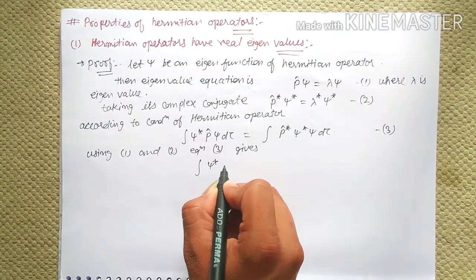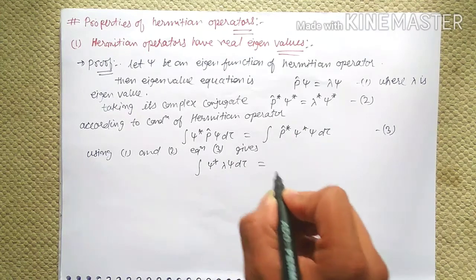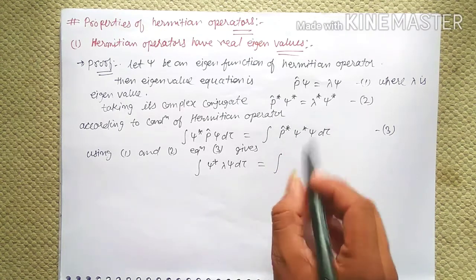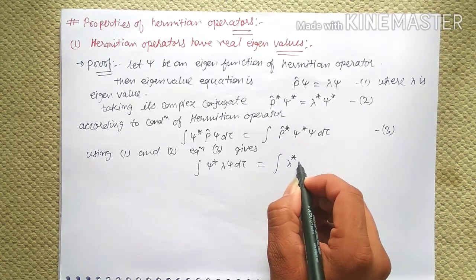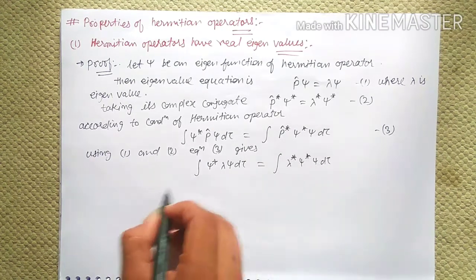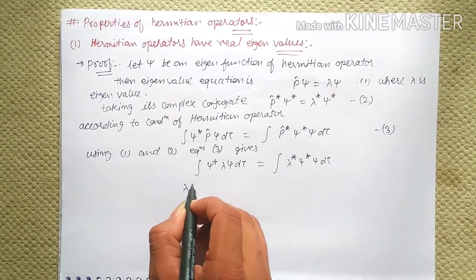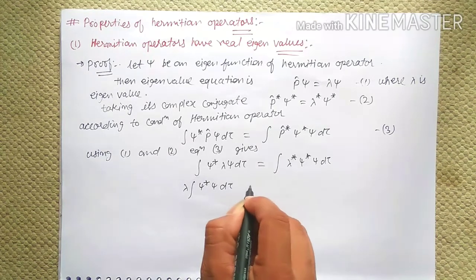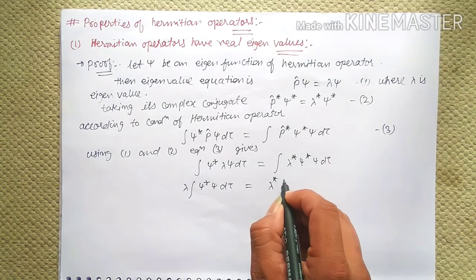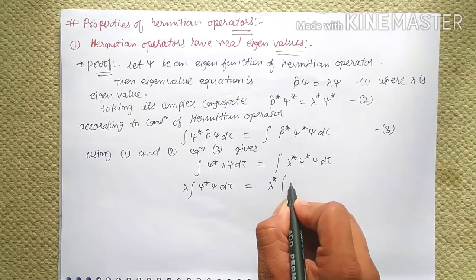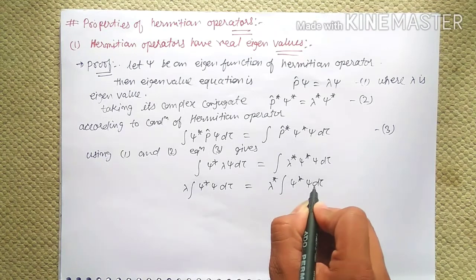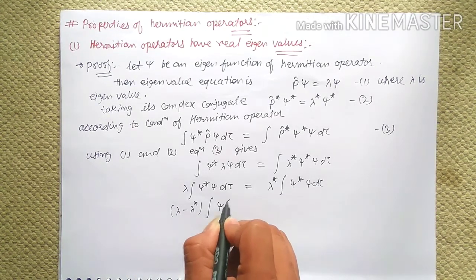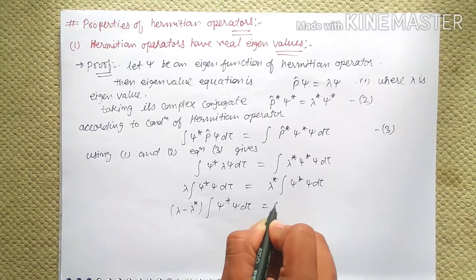Using equations one and two, equation three gives: integration of psi* lambda psi d-tau equals integration of lambda* psi* psi d-tau. Lambda comes out of the integration sign: lambda times integration of psi* psi d-tau equals lambda* times integration of psi* psi d-tau. Therefore, (lambda minus lambda*) times integration of psi* psi d-tau equals zero.